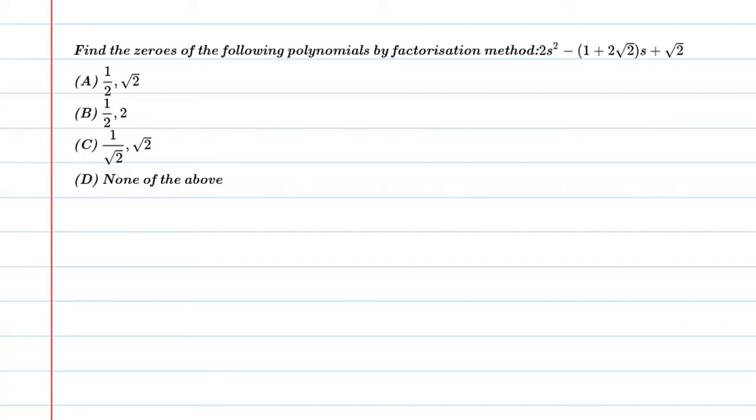Hello students, let's solve this question. Find the zeros of the following polynomial by factorization method: 2s² - (1 + 2√2)s + √2.